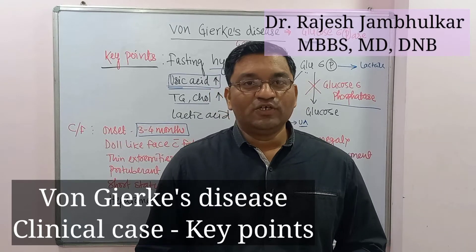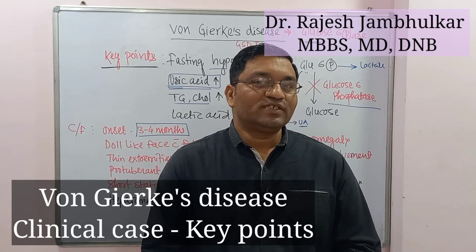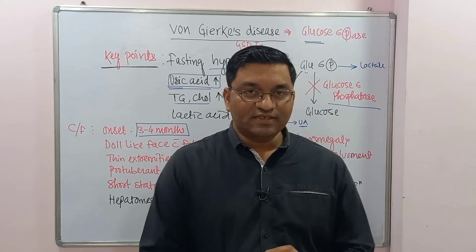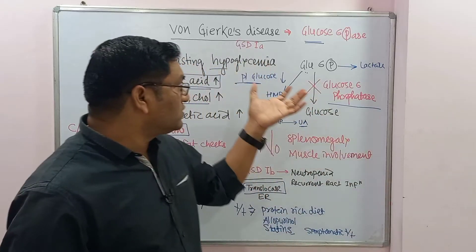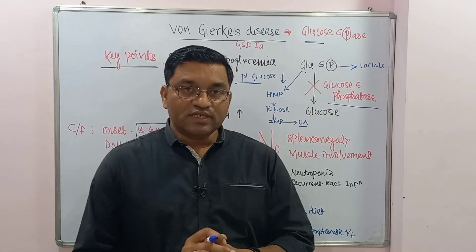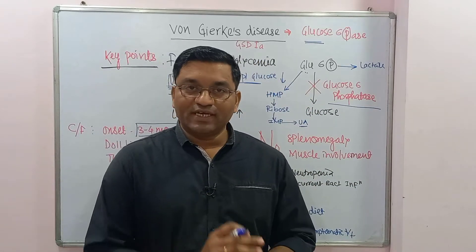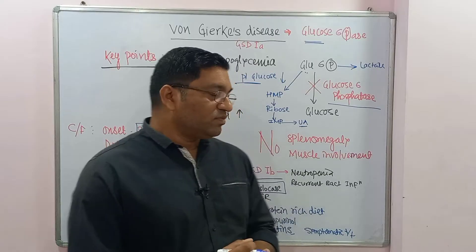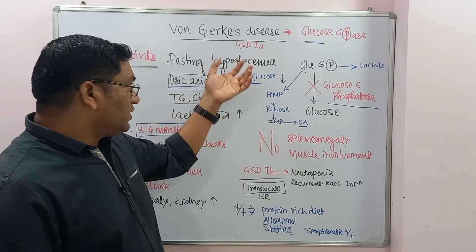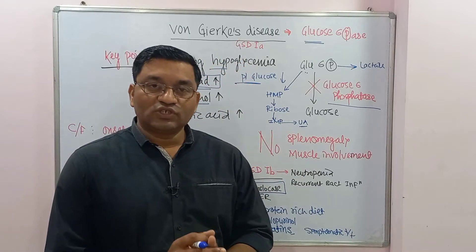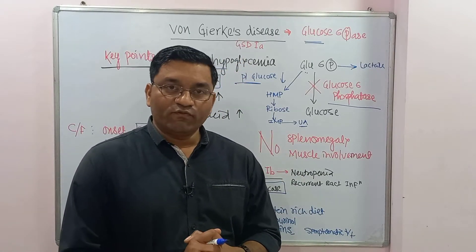Hello everyone. Today's topic of discussion is a clinical case: Von Gierke's disease, which is an important case from carbohydrate metabolism. It is a glycogen storage disorder type 1.